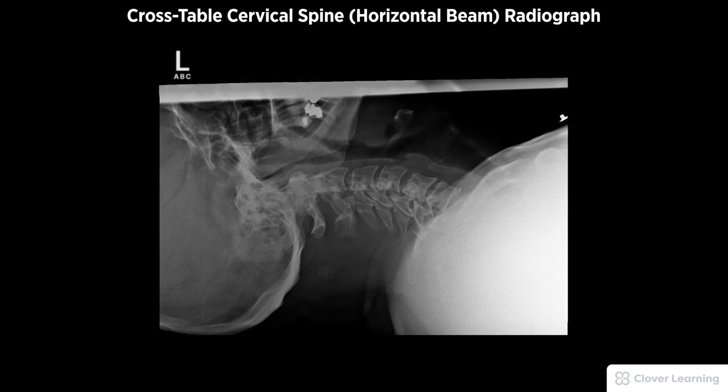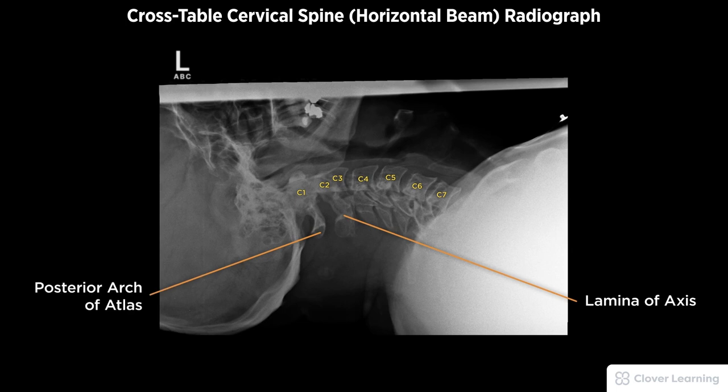A diagnostic cross-table lateral cervical spine radiograph must be free of motion and rotation. Demonstrated anatomy includes the upper cervical vertebrae, superimposed lamina of the axis, and posterior arch of the atlas, with proper visualization of soft tissue and bony detail.